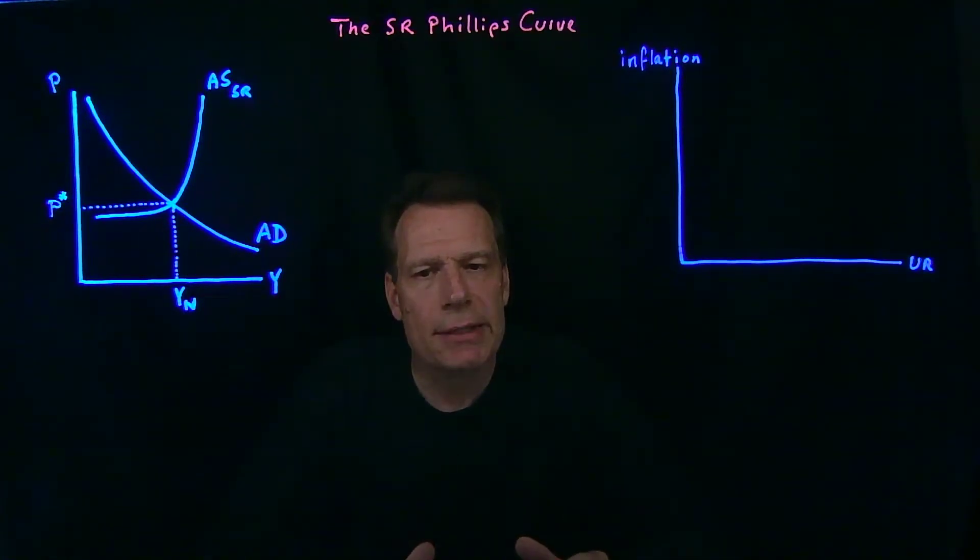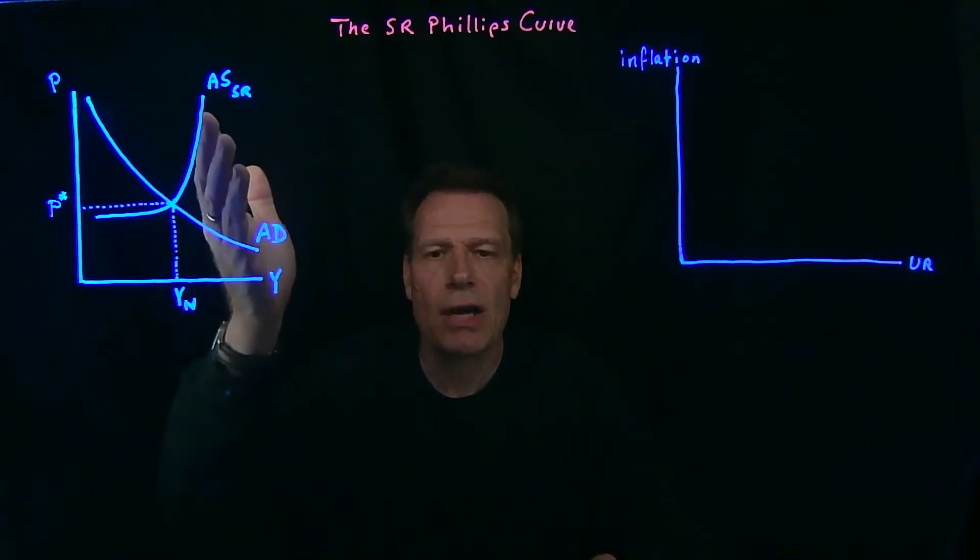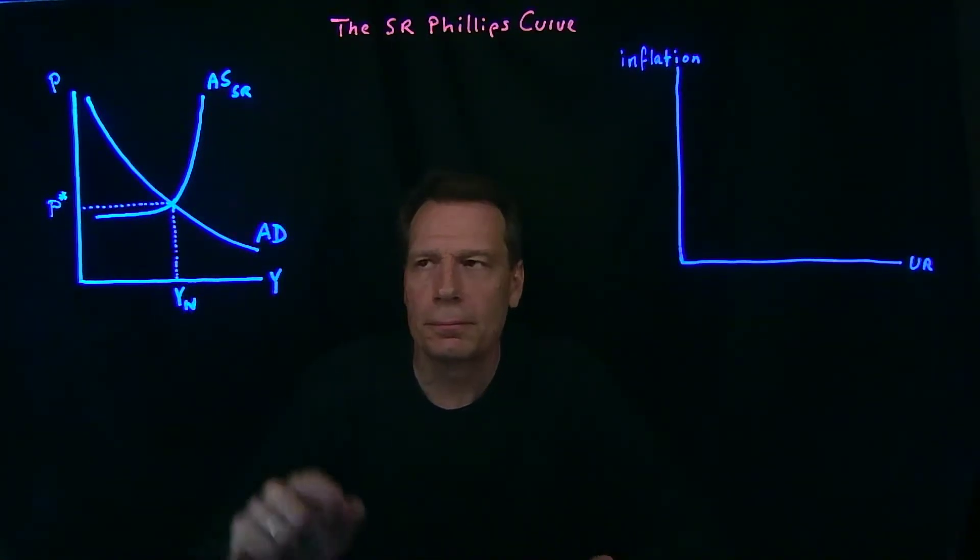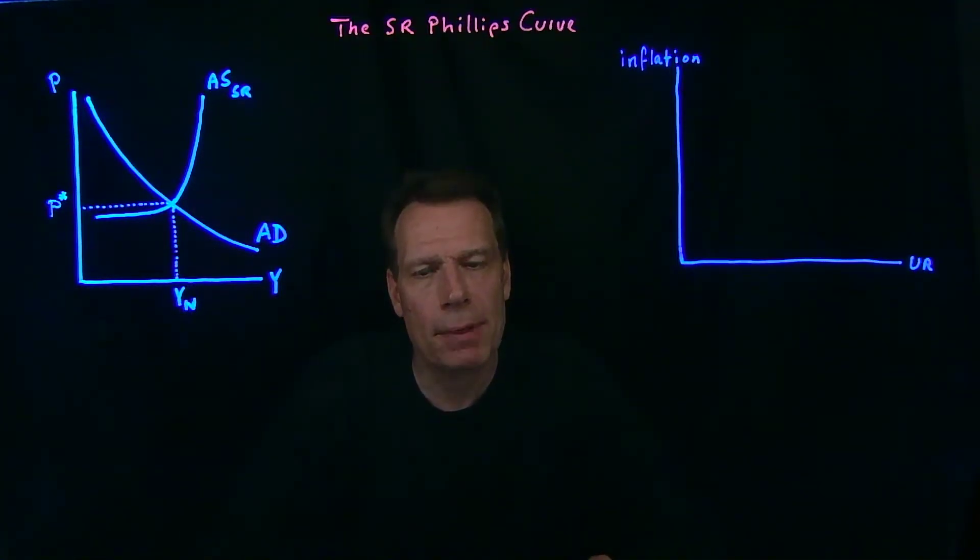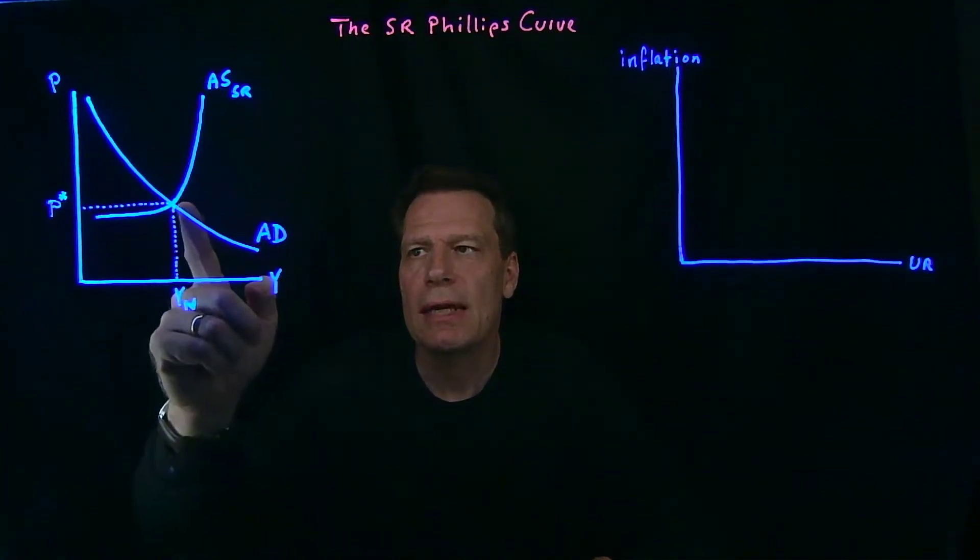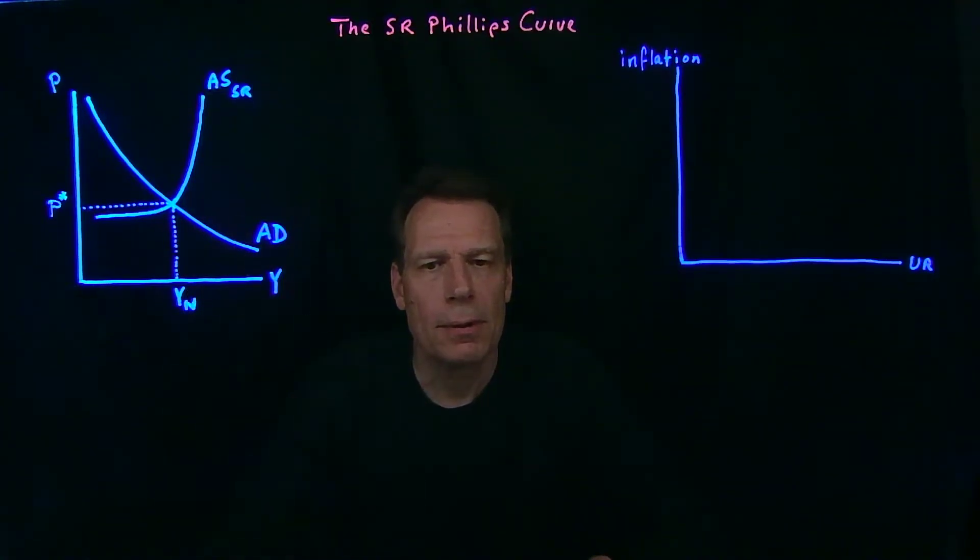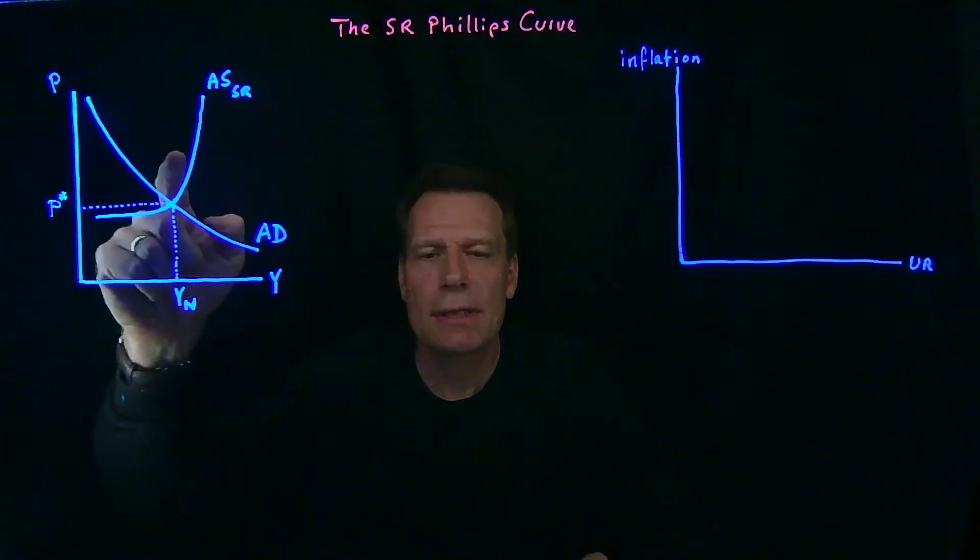Now we want to ask, what happens if there's a boost in aggregate demand, if the aggregate demand curve shifts up or to the right? In that case, we're going to move up that short run aggregate supply curve, and we'll see increases in output, albeit at a relatively modest rate, and increases in prices.